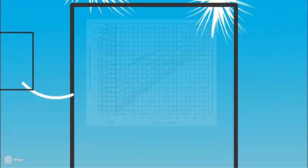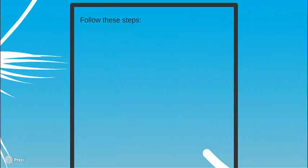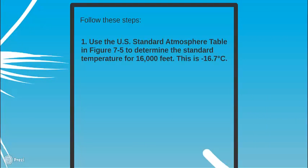Determine the weight at the end of cruise by using the gross weight table of Figure 7-4 and following these steps. First step: use the U.S. Standard Atmosphere Table in Figure 7-5 to determine the standard temperature for 16,000 feet. This is negative 16.7 degrees Celsius.